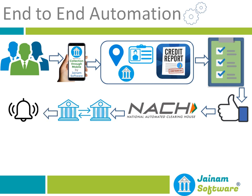Jobs are scheduled in the software so that five days and two days before the actual due date of the installment, a job is triggered and a notification is sent to the customer to keep sufficient balance in their bank account for automatic transfer. On the specific due date, the amount is deducted from the borrower's account and transferred to your account.